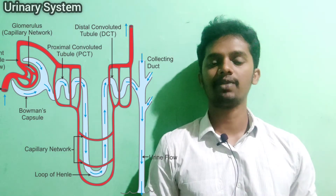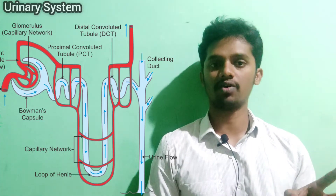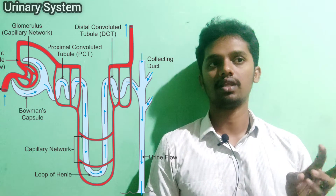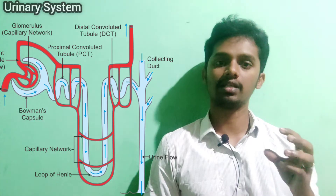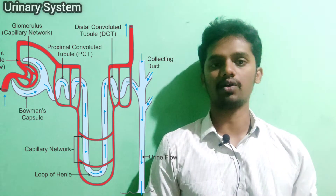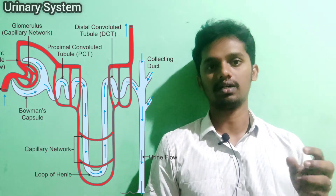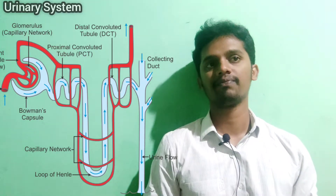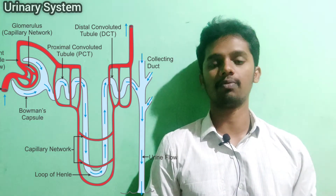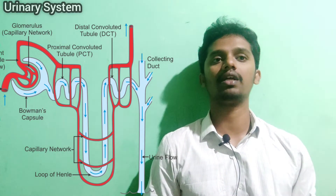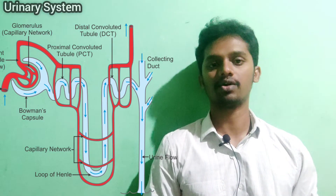If you look at the anatomy of the nephron, it consists of a glomerulus, then a Bowman's capsule, then tubules including proximal convoluted tubules, then a loop of Henle, then distal convoluted tubules, and finally a collecting duct. This is the nephron structure.